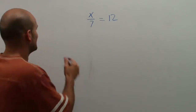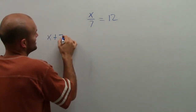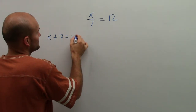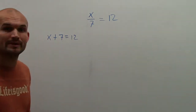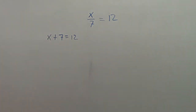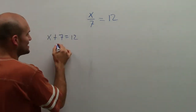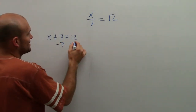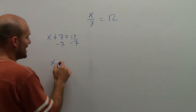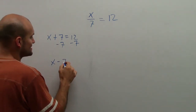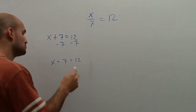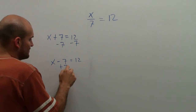Let's say I had x plus 7 equals 12. What would we do on both sides? We would subtract by 7. What if I said x minus 7 equals 12? What would we do here? We would add 7.